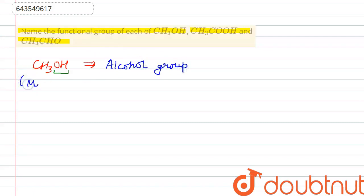Then second, we are having CH3COOH. This contains this carboxylic acid group, COOH, which is carboxylic acid group as the functional group. This compound is acetic acid.